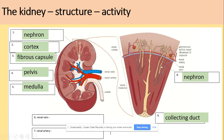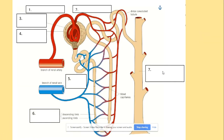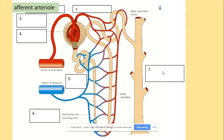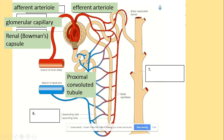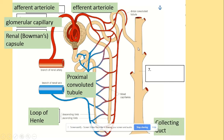This is the single unit nephron that we will be looking at. You need to know the structure of the nephron. We start with the arterioles — afferent coming in, efferent coming out — and the glomerular capillaries inside the Bowman's capsule. We then have the proximal convoluted tubule, which leads to the loop of Henle, divided into the descending limb going down and ascending limb going up. That then joins the distal convoluted tubule, leading to the collecting duct.